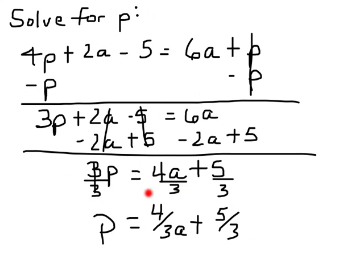We subtracted 6a minus 2a and got 4a, so dividing by 3 we have p equals 4/3 a plus 5/3. Now, this lesson is very important because it's going to set you up for learning how to graph an equation.